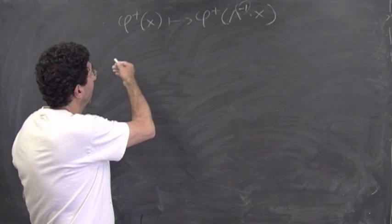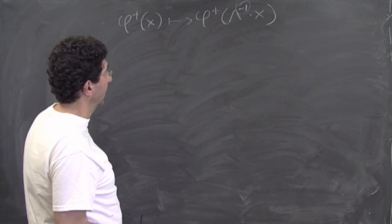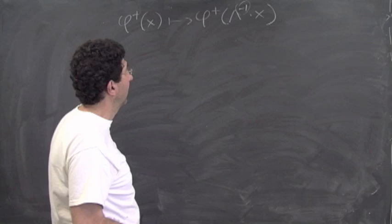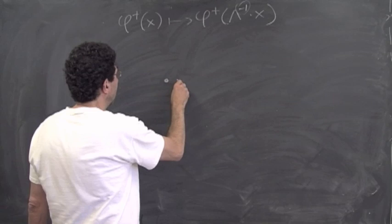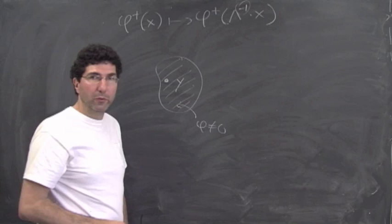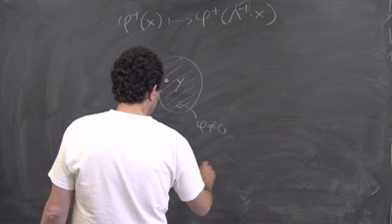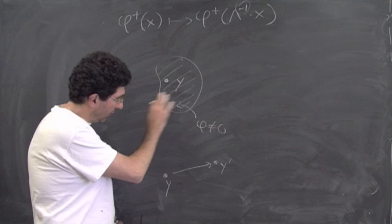To summarize: we've defined fields phi+ and phi-, which are functions of spacetime that transform as phi+(x) → phi+(lambda^{-1} x) — just the way any scalar field transforms in spacetime. Since these fields are Fourier transforms of the alpha's and alpha†'s, and any operator in Fock space can be written in terms of these, we know that any operator can be expressed in terms of these position-space fields.